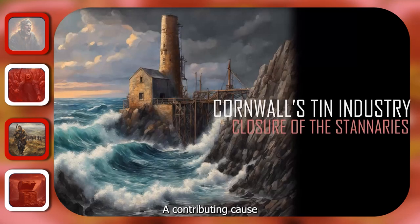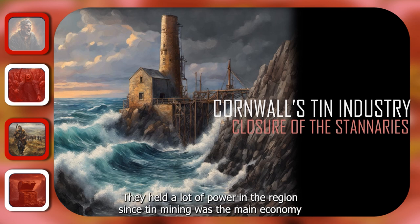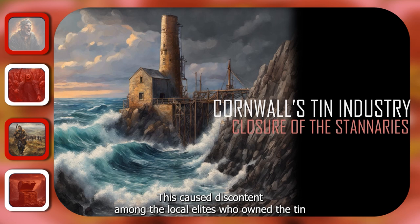A contributing cause for the rebellion was the closure of the Stanneries. These acted like a late medieval trade union since they represented the miners of Cornwall's tin industry. They held a lot of power in the region since tin mining was the main economy of the south-west. In an attempt to gain more central control over the region, Henry had closed the Stanneries, causing discontent among the local elites who owned the tin mines.